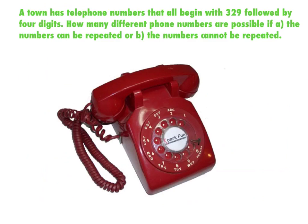All right. So a small town has telephone numbers that all begin with 329 followed by four digits. How many different phone numbers are possible if A, the numbers could be repeated, like 5555, or B, the numbers cannot be repeated? So if you look on my little diagram here, there are 10 different options for each digit.